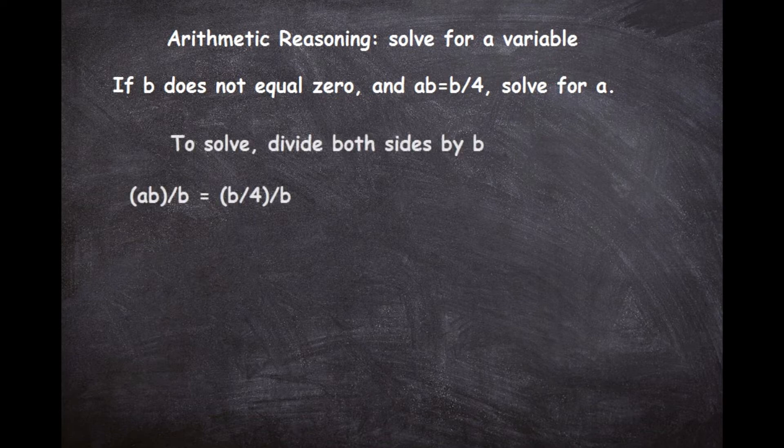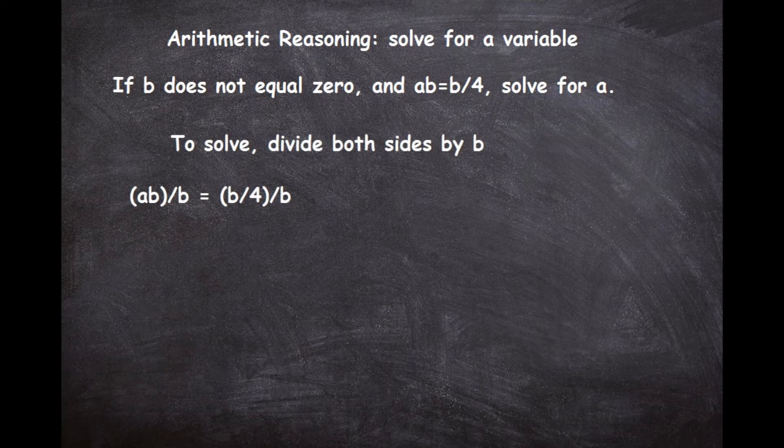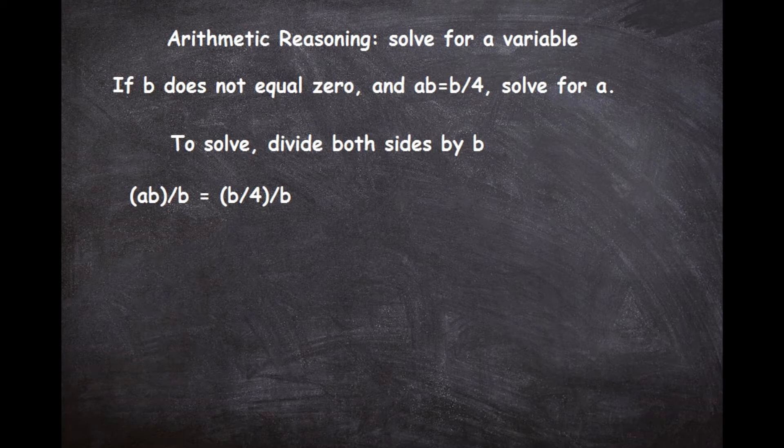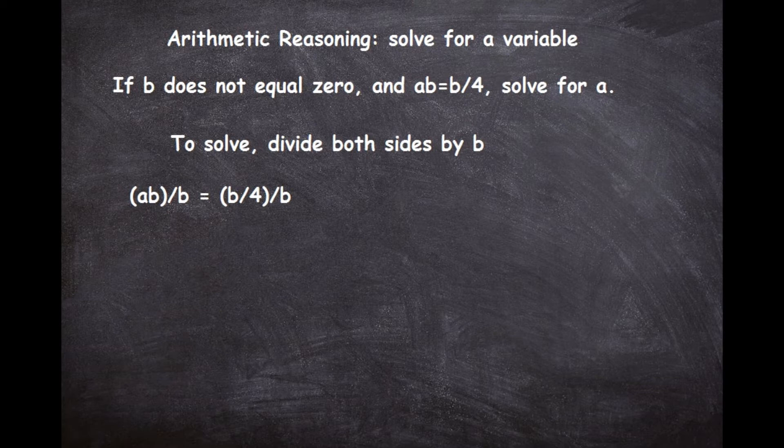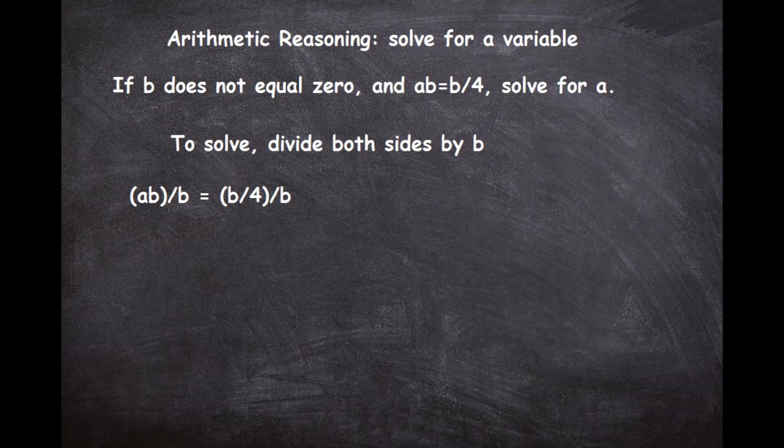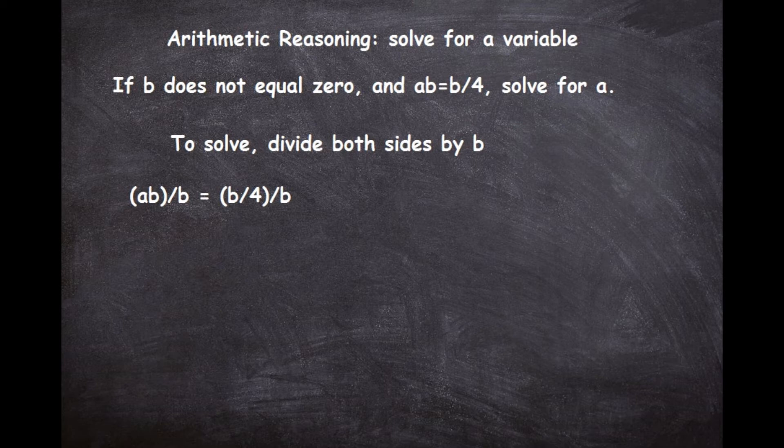So we'll divide ab by b, and we'll divide b/4 divided by b, because remember whatever you do to the left side you have to do to the right side in order to keep the equation equivalent. So let's go ahead and do this and divide both sides by b. On the left side we'll have ab over b, and the right side will have b over 4 over b.